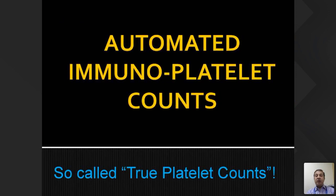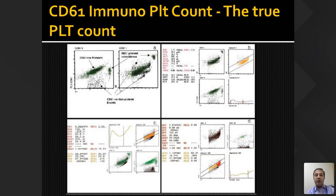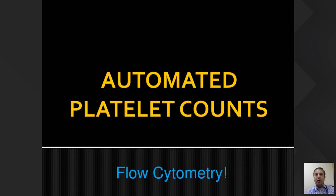Automated immunoplatelet counts are claimed to be 'true platelet counts.' One instrument from Abbott uses CD61 immunostain for platelet counting — because it identifies platelets very specifically, it gives exact platelet counts that correlate very well with flow cytometer results. The biggest challenge is cost: where a normal platelet count costs 20–50 rupees, this methodology costs at least 200–300 rupees.